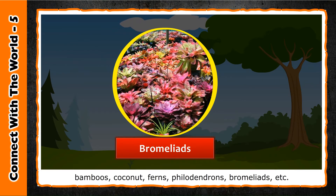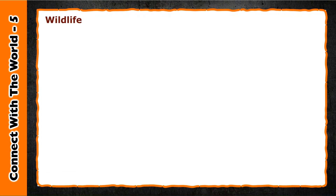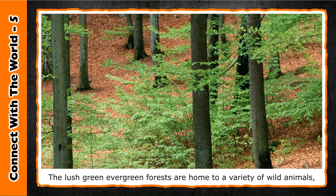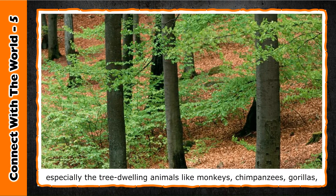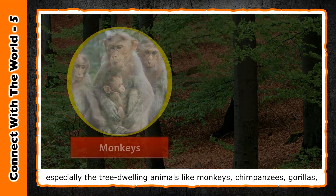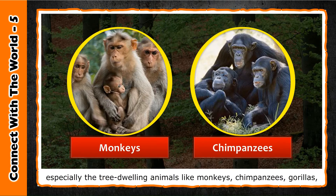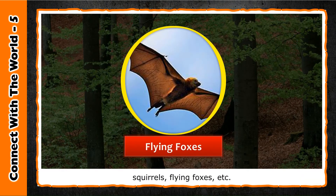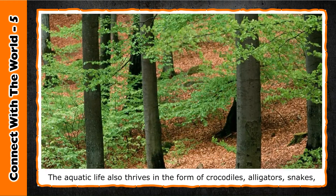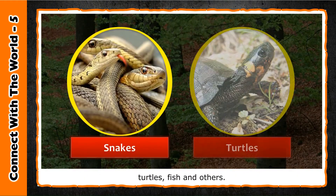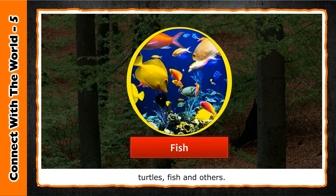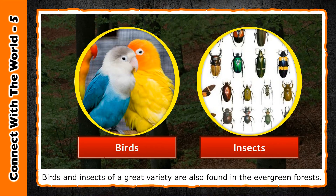Some commonly found trees of these forests are lianas, kapok, bamboos, coconut, ferns, philodendrons, bromeliads, etc. Wildlife: The lush green evergreen forests are home to a variety of wild animals, especially tree-dwelling animals like monkeys, chimpanzees, gorillas, squirrels, and flying foxes. Aquatic life also thrives in the form of crocodiles, alligators, snakes, turtles, and fish. Birds and insects of great variety are also found in the evergreen forests.